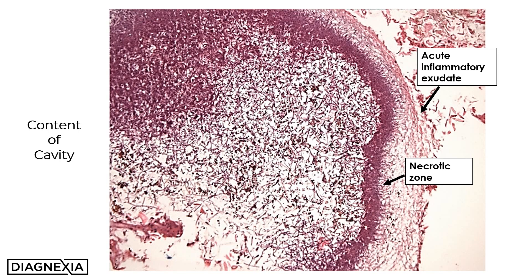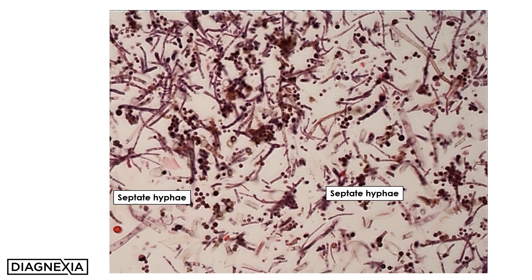There is a compressed necrotic zone sandwiched between the acute inflammatory exudate and obvious fungal elements which are seen centrally. Under higher magnification, one can see these brown pigmented fungal elements, both spores as well as hyphal forms.